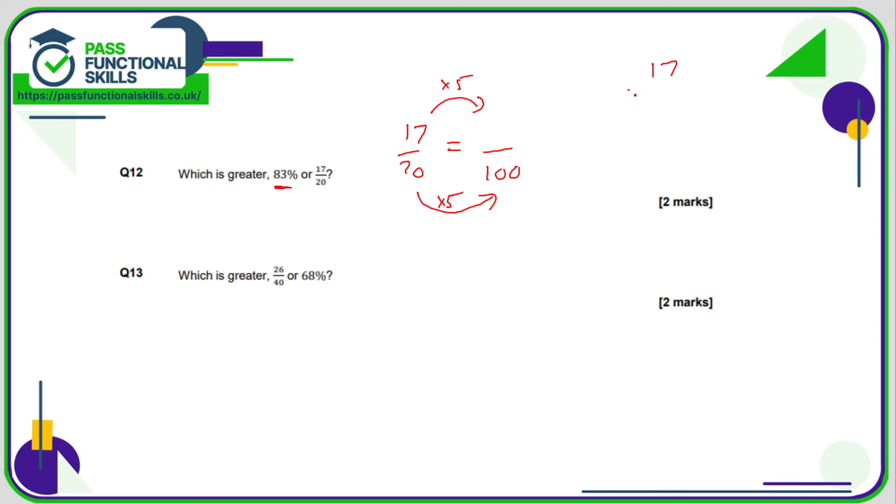So what is 17 multiplied by 5? 5 times 7 is 35, carry the 3. 1 times 5 is 5 plus 3 is 8. So 17 out of 20 is the same as 85 out of 100 which is otherwise known as 85%. 85% is greater than 83% so therefore 17/20 is greater than 83%. Question 13.